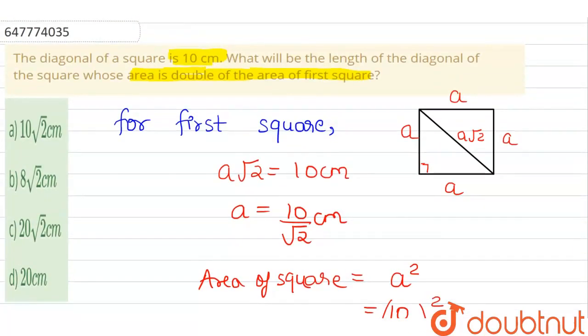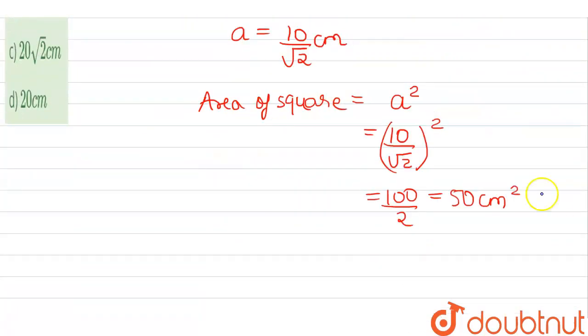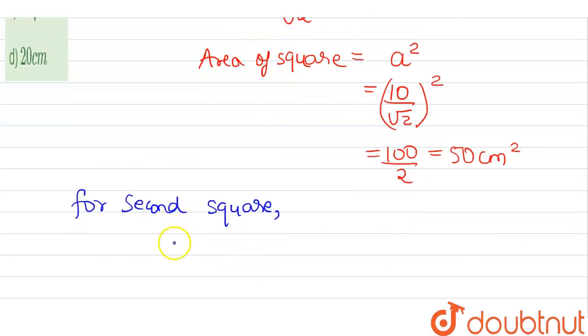That is the area of the first square. Now I am saying that the second square, the area is double. Two times, so 2 × 50 = 100 cm².